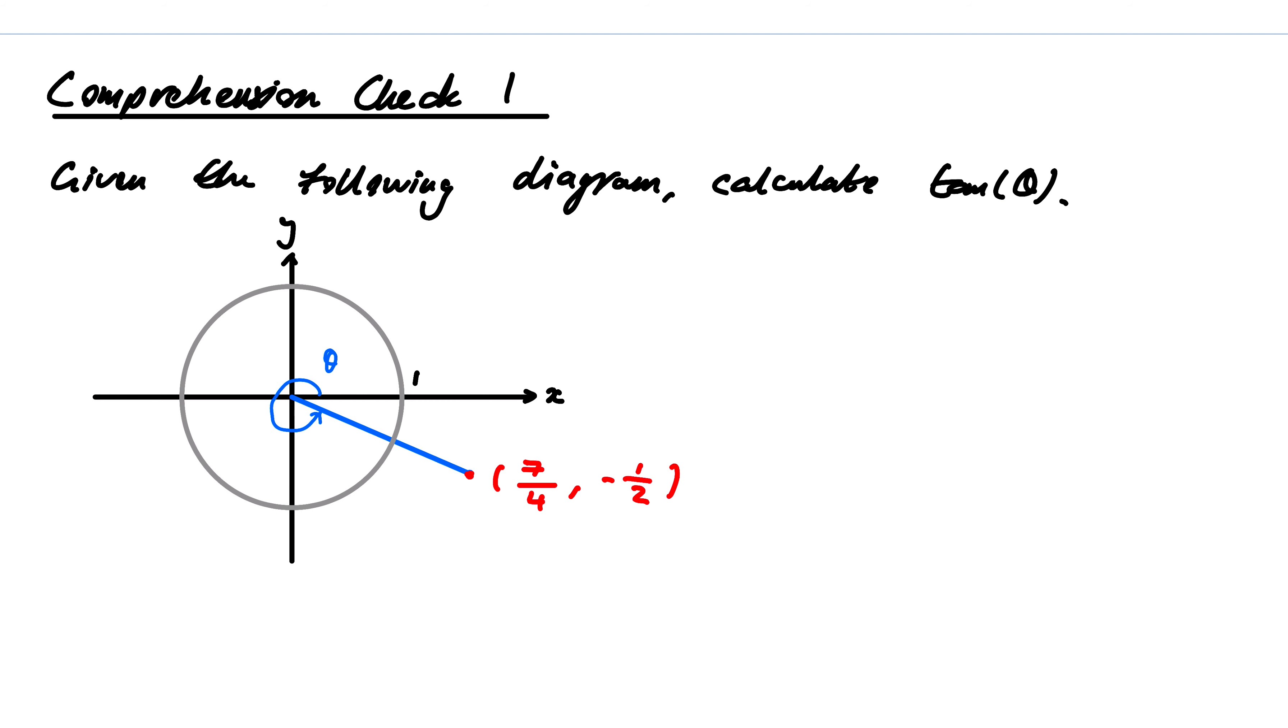So what we've just seen is that this blue line here, we've realized that the slope of this line is equal to tangent of theta. So what that means is I need to calculate the slope of this blue line. The slope of this blue line will be equal to tan of theta.